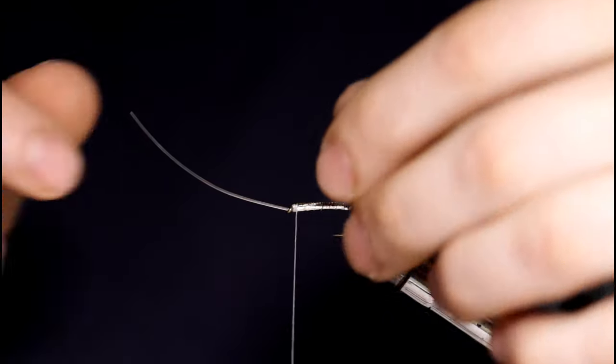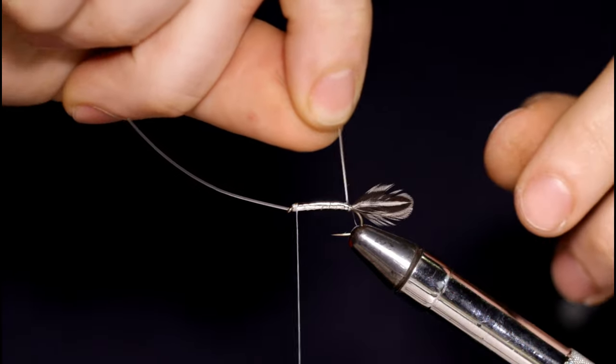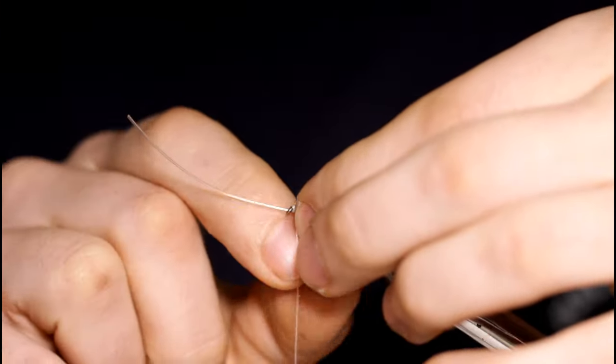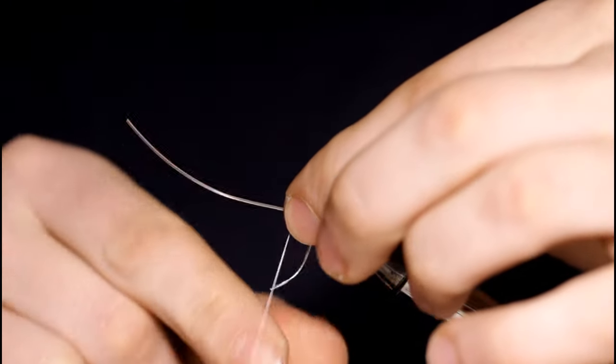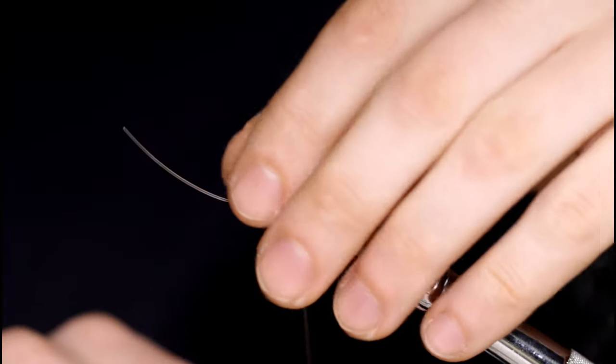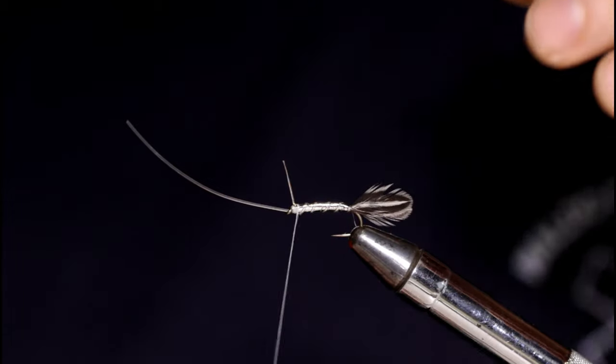Now I'm going to grab the oval silver tinsel and rib this. Open spiral wraps forward. And once you get up here to the head just bind down the material and snip it off.